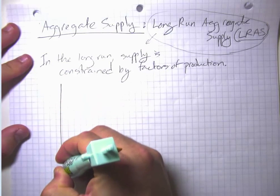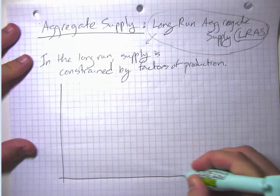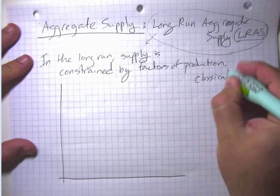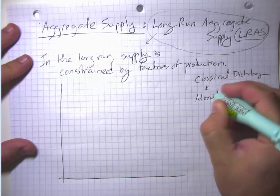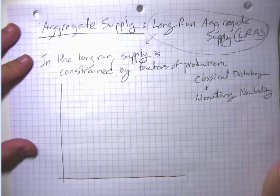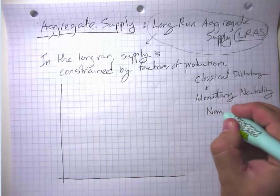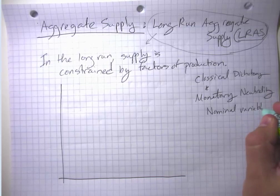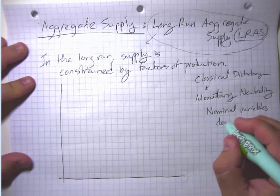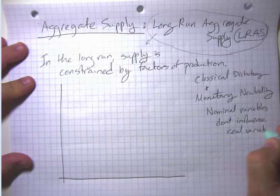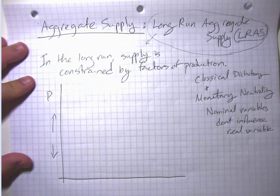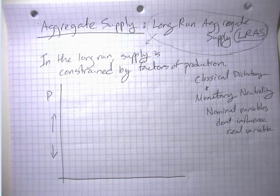Remember that we think that in the long run, the classical dichotomy holds — and the associated idea of monetary neutrality holds in the long run. The basic idea here is that nominal variables are just labels that we put on things, and nominal variables don't influence real variables. When a price goes up or down, that's like we're just putting a new label on something — like deciding to call giraffes 'schmooze.' That's not going to change what a giraffe really is or how many giraffes we have.